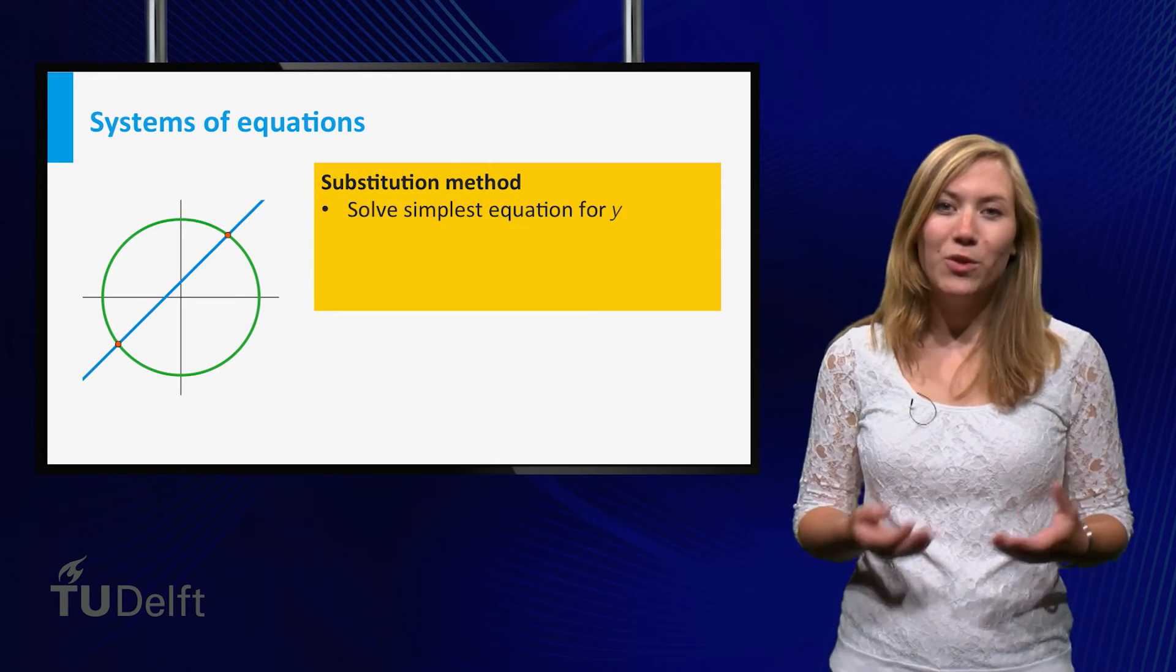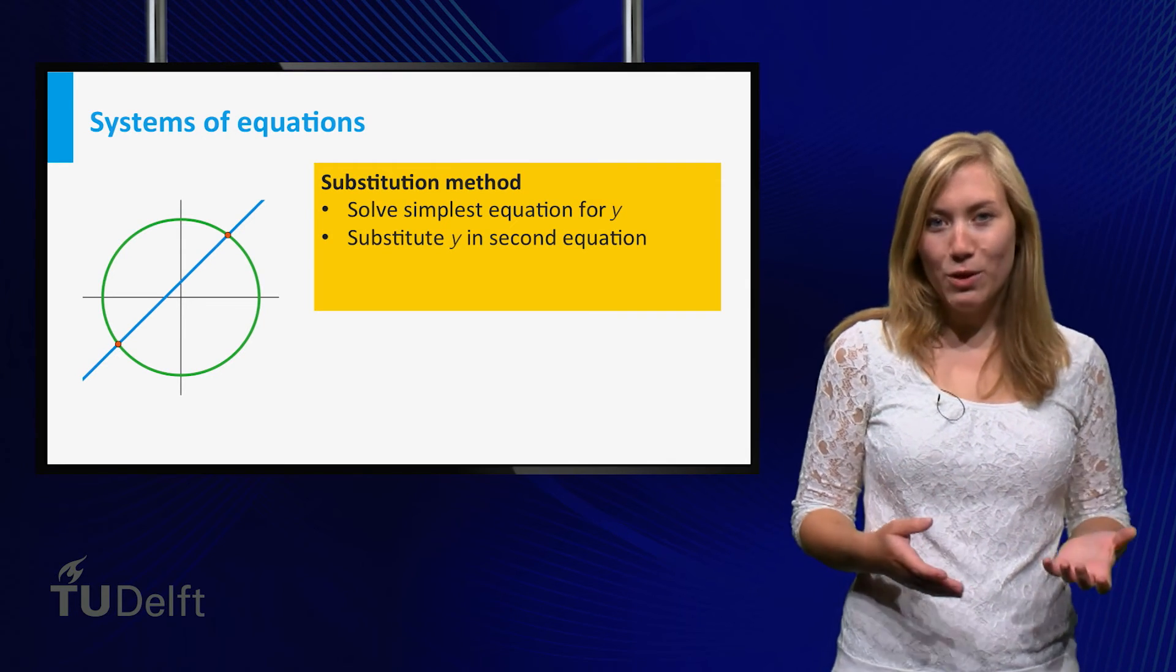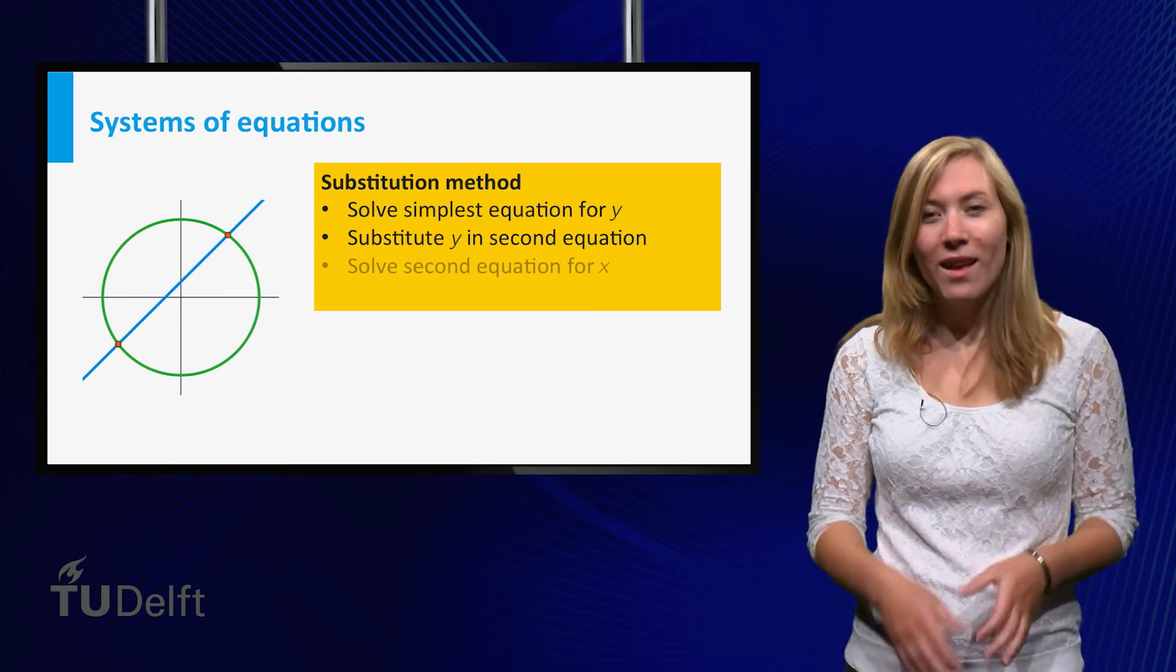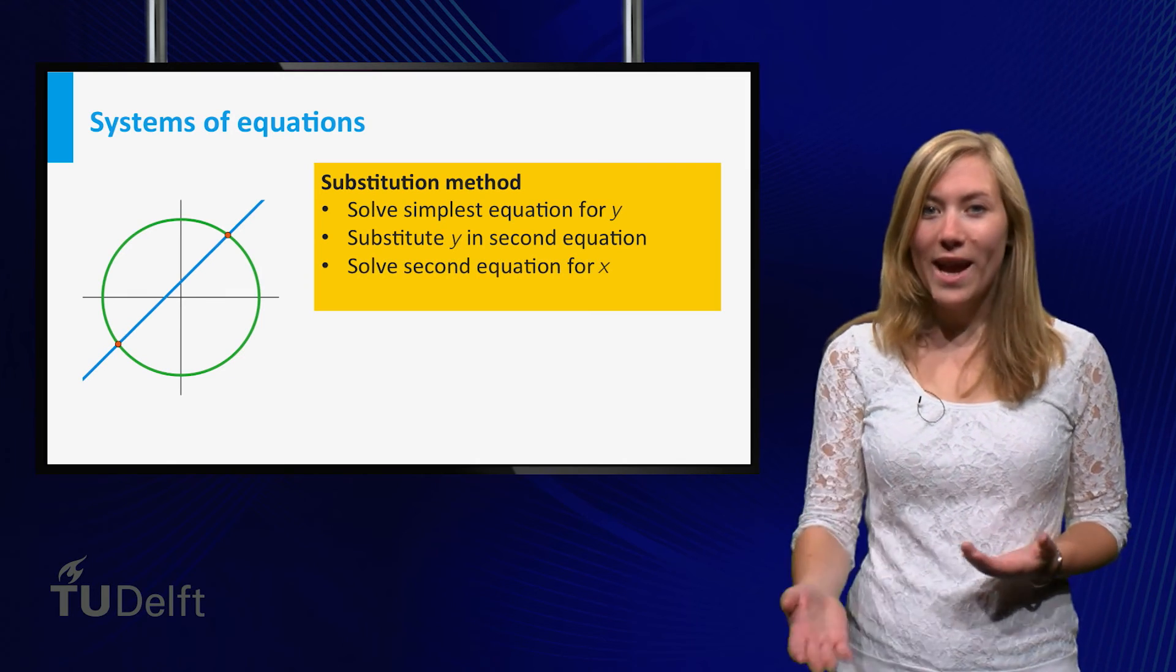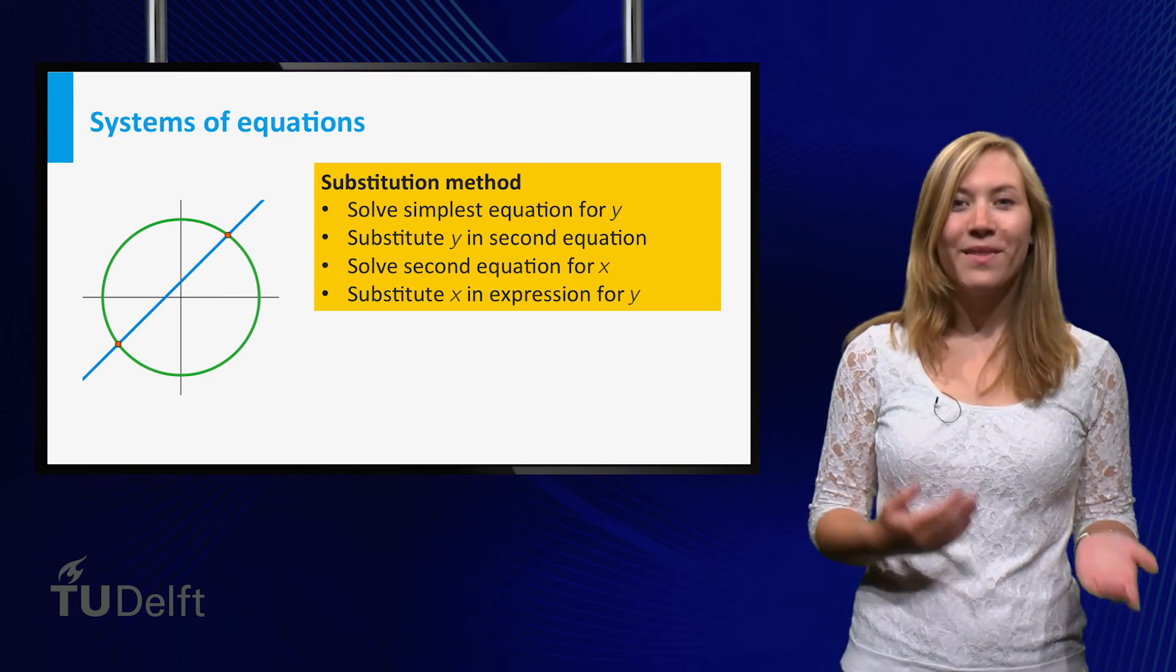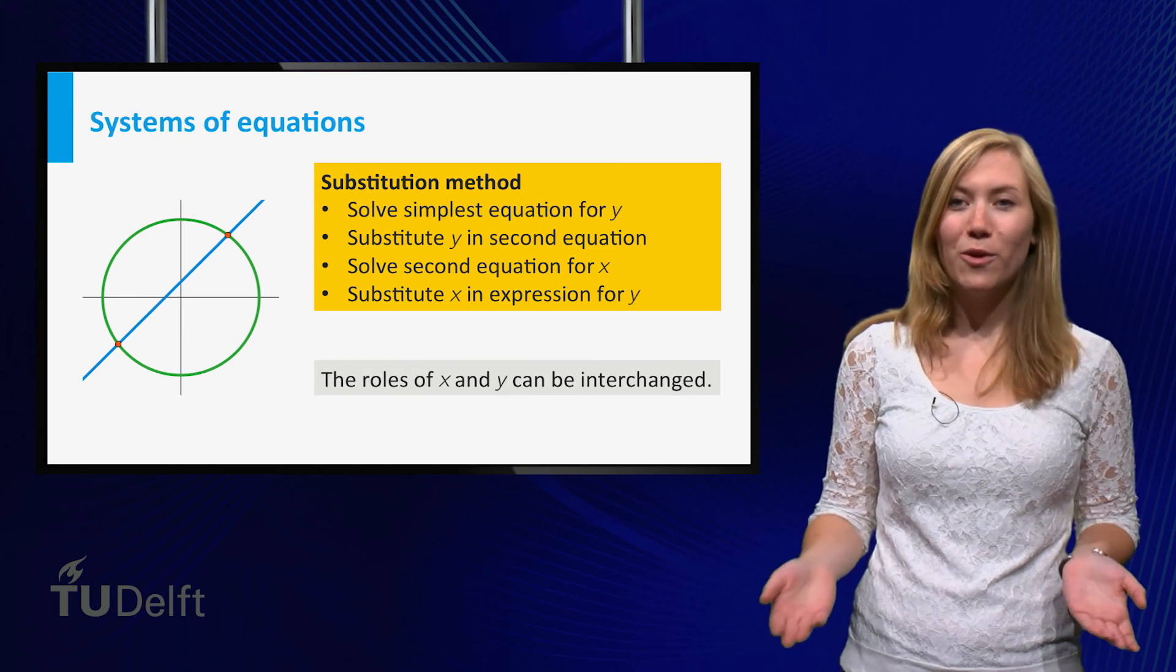Solve the simplest of the two equations for y. Substitute the expression for y in the second equation to obtain an equation only in x. Then solve this equation for x and substitute the result in the expression for y. Instead of first solving for y, you can also first solve for x.